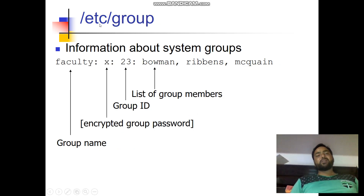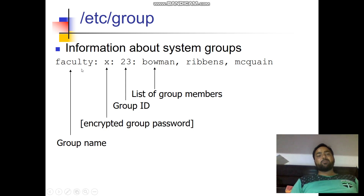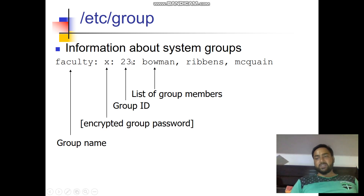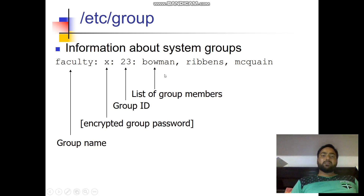Another file is /etc/group. It contains information about system groups. For example: faculty:x:23:bowman,ribbons,mcwin — here 'faculty' is the group name in which various users can exist. 'x' is the encrypted group password. '23' is the group ID to uniquely identify the group in the system. 'bowman, ribbons, mcwin' is the list of group members.